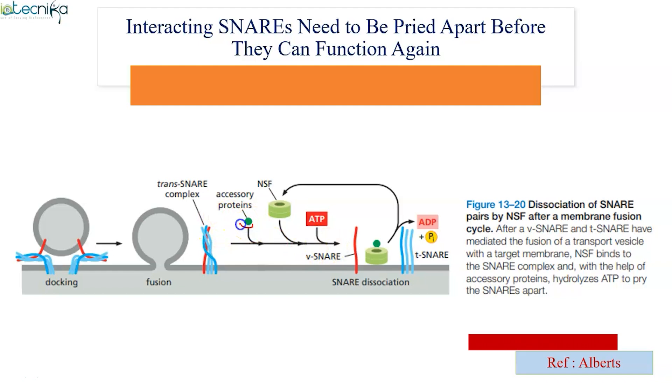This is your accessory protein, SNAP-25, and this is your NSF, the major protein along with ATP. The three will combine together and you can see v-SNARE and t-SNARE is separated now. Now the SNARE proteins are ready to take up another set of reactions.